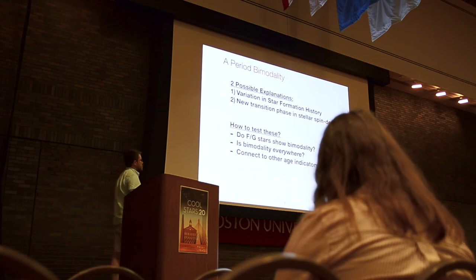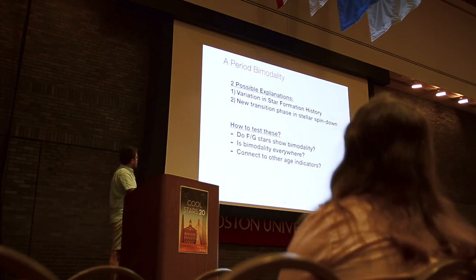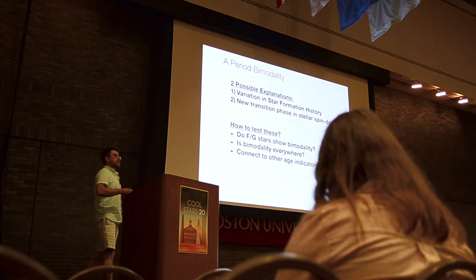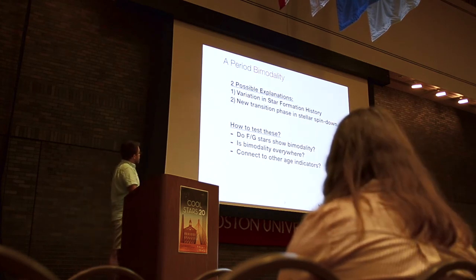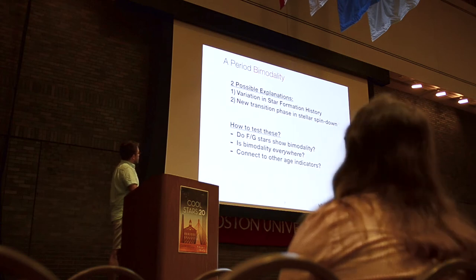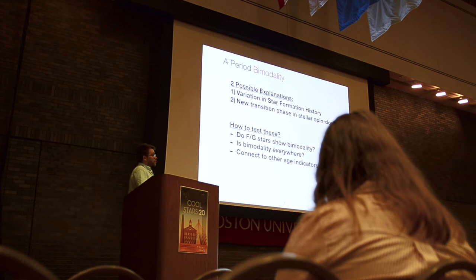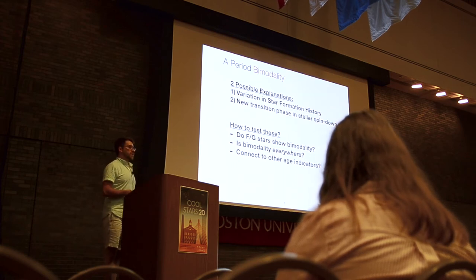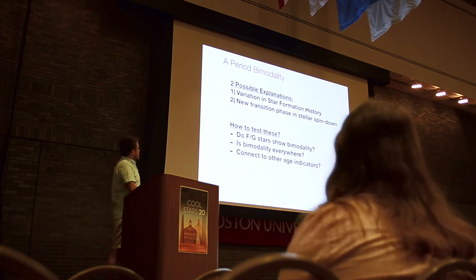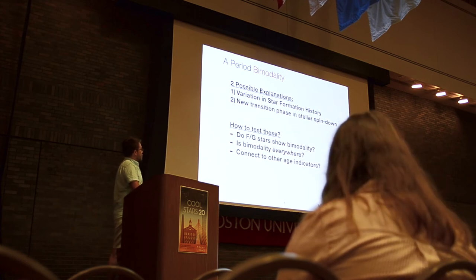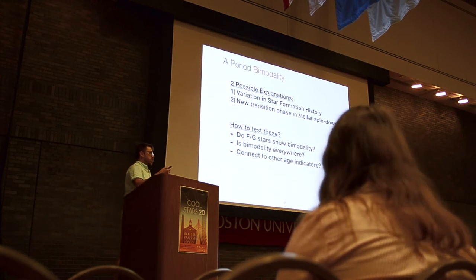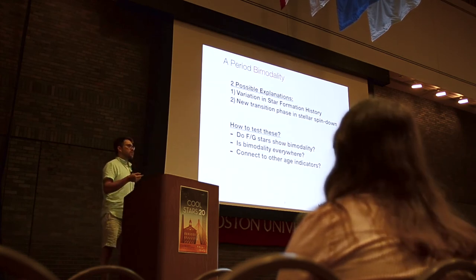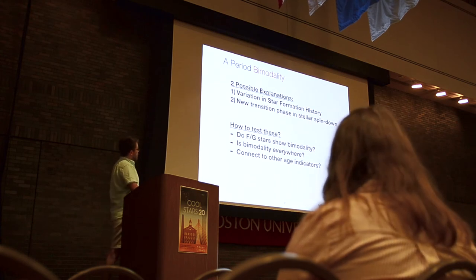Two possible explanations were presented. The first is that it represents a variation in star formation history — this is arguably the simpler explanation. Gyrochronology must work, and therefore this bimodality represents a bimodal star formation history. The second, though it seems a little out of hand, is that this bimodality represents a new unknown phase of stellar evolution — some sort of spin-down phase or Rossby number that is jumped through quickly. This is not completely unreasonable, especially considering that it was only the K and M-dwarfs. Maybe they are special, and the G-dwarfs were tracing the star formation history.